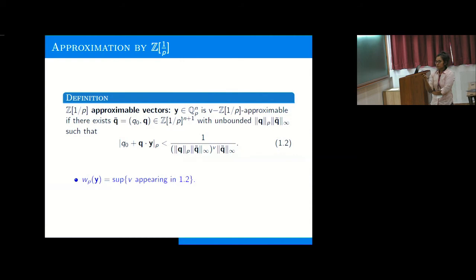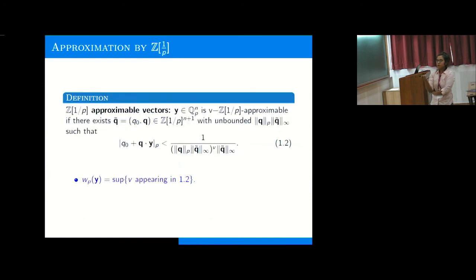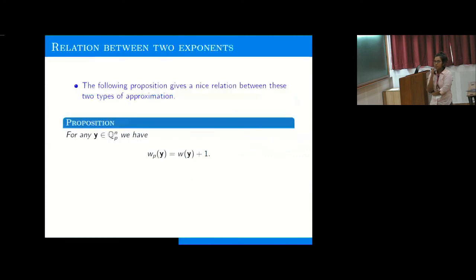We consider a new definition of Z[1/p]-approximability, where the exponent is the supremum of v in the approximation equation using Z[1/p]^{n+1} vectors with unbounded components. If something is v-approximable under this new definition, then it is (v-1)-approximable under the previous definition, though the other direction is not true. However, the exponents of the two definitions are related by a shift of 1 for every Y, so proving results under one definition gives analogous results under the other.